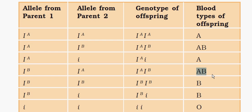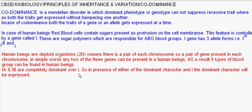This is the example of codominance. When two dominant characters are passed by two parents, both the dominant characters are expressed together. They do not get mixed, and neither hampers the other — both dominant characters get expressed at the same time without hampering the expression of the other.